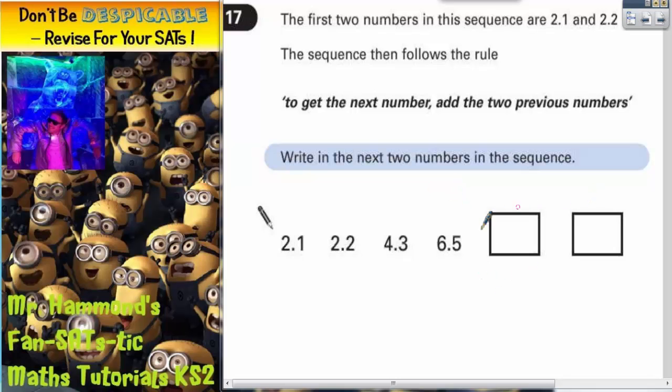To get the next number in the sequence, we've got to add the two previous numbers, which are 4.3 and 6.5. So we've got to add them. Easiest thing to do is use the column method. So 4.3 add 6.5. Make sure you line the decimal points up.